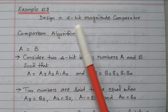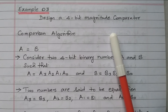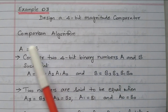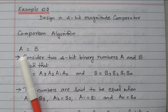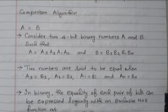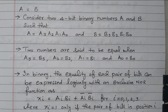We have the 4-bit magnitude comparator. We need to compare two numbers having 4 bits, whether both the numbers are equal, greater, or lesser. For that, we have a comparison algorithm available. First, we will see A equal to B, whether both the numbers are equal. Based on the algorithm, we can obtain the Boolean expression, which can be implemented with logic gates.